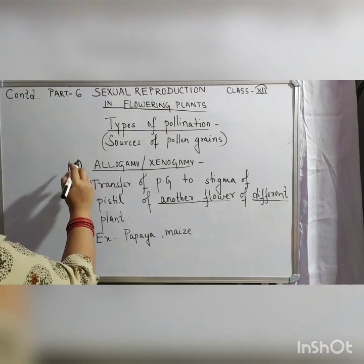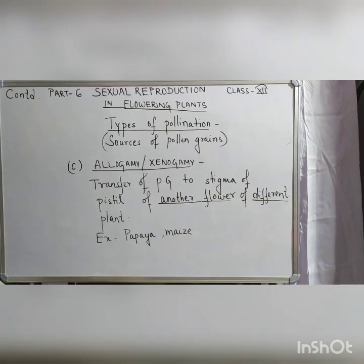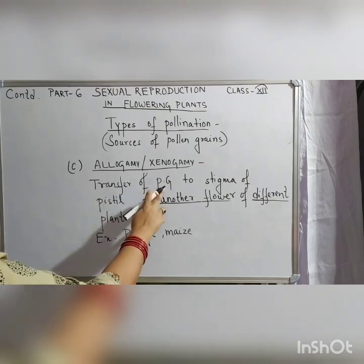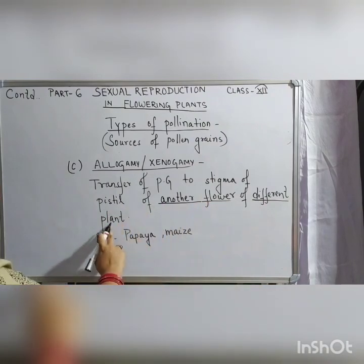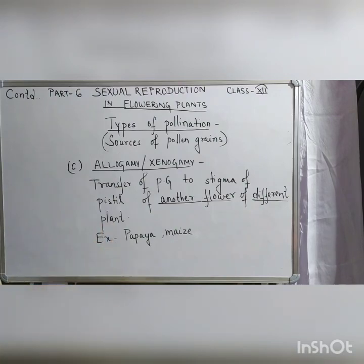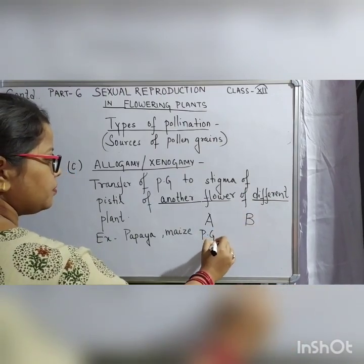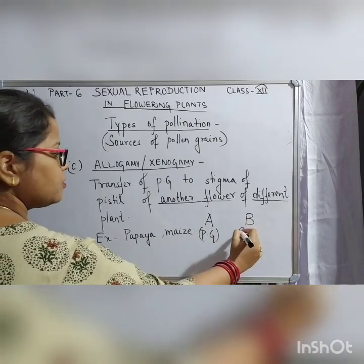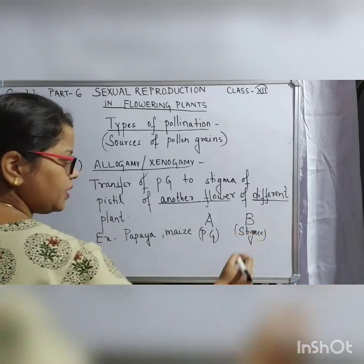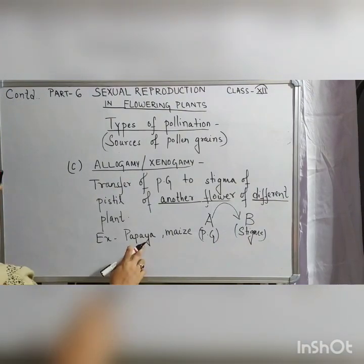The third and last type of pollination is xenogamy, also called allogamy. It involves a totally different flower on a different plant — transfer of pollen grains to the stigma of the pistil of another flower of a different plant. For example, pollen grains of Plant A transfer to the stigma of Plant B. Examples are papaya and maize.